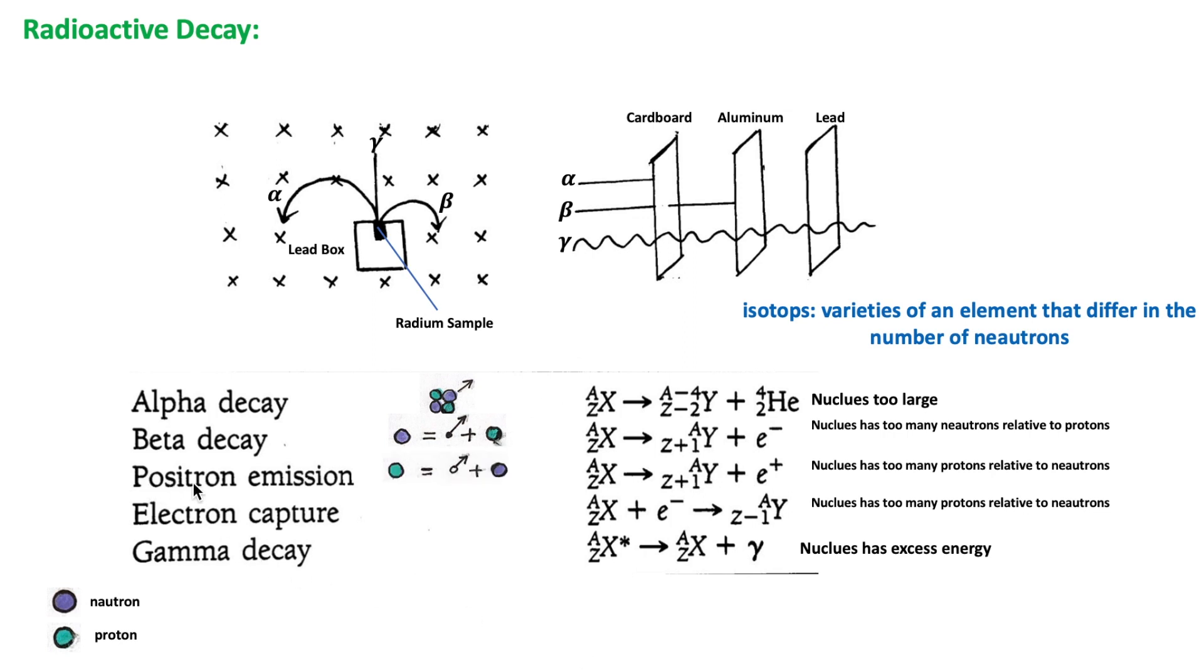For the positron emission, the reason for the decay is that the nucleus has too many protons relative to the number of neutrons. The emission of a positron by a proton will change the proton into a neutron.